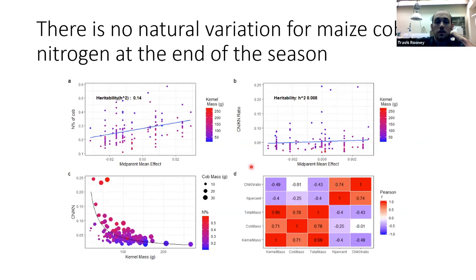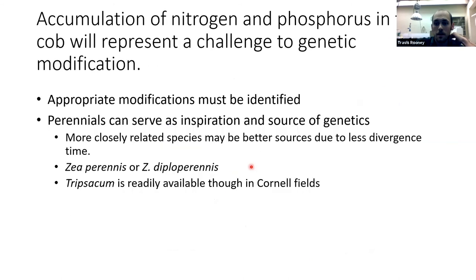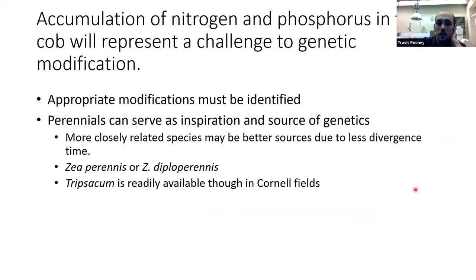That's simply because maize is an annual plant — there's no benefit for it to store any nutrients in the cob because it won't be able to access those easily the next year. It benefits maize to shunt all the nutrients it can into the kernel. So the accumulation of nitrogen and phosphorus in the cob represents a challenge to genetic modification and will require a lot of research. Appropriate modifications must be identified, and perennials — such as Populus — can perhaps serve as a source of inspiration, since they store nutrients in their vascular system that we might leverage.